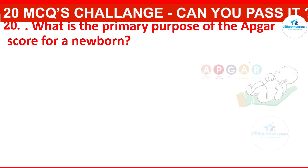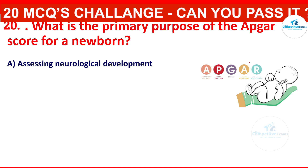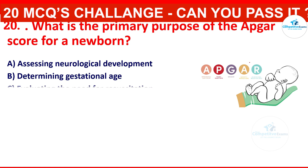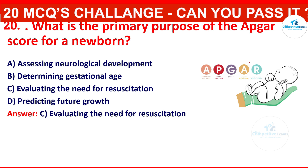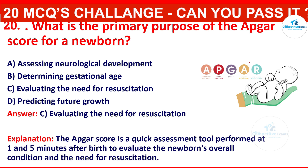What is the primary purpose of the APGAR score for a newborn? Your options are: 1) assessing neurological development, 2) determining gestational age, 3) evaluating the need for resuscitation, or 4) predicting future growth. The correct answer is evaluating the need for resuscitation. The APGAR score is a quick assessment tool performed at 1 and 5 minutes after birth to evaluate the newborn's overall condition and need for resuscitation.